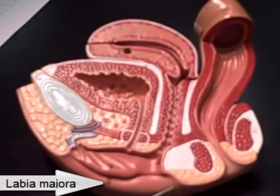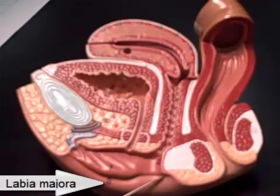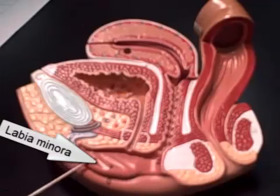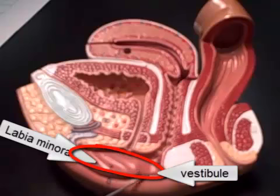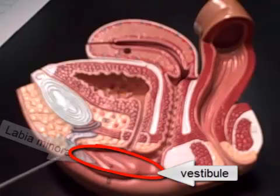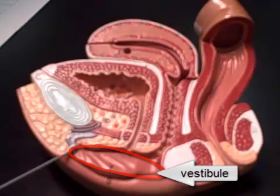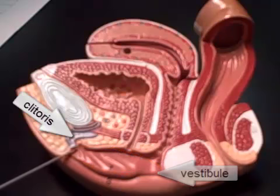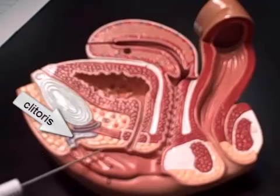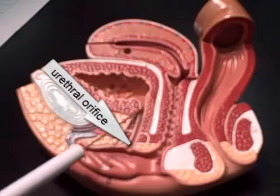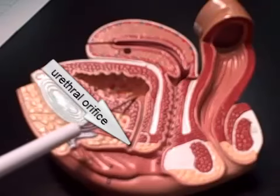Looking at the female tract, we can see the labia minora, which covers on both halves the vestibule. The inside area here is called the vestibule. In the anterior area we can see the clitoris, followed by the opening of the urethra, which enters into the bladder.